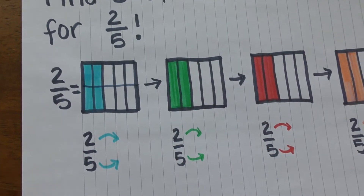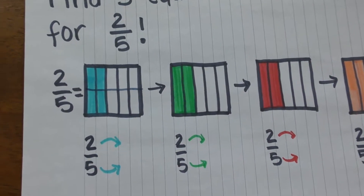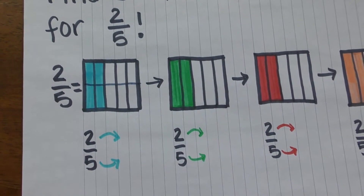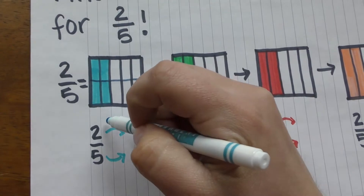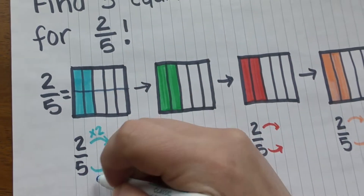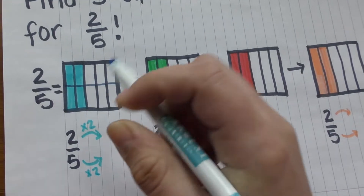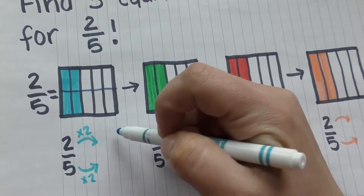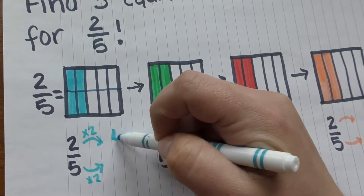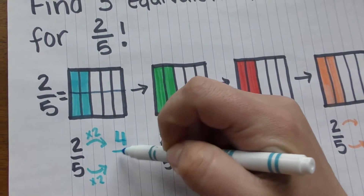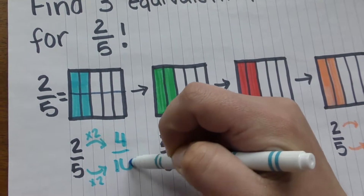But to do that, we can also multiply the numerator times two and the denominator times two to get four tenths.